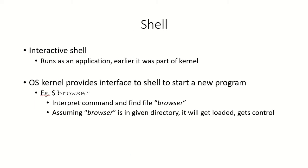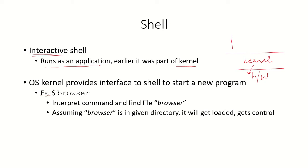Now, an introduction to the shell. The shell provided by the Unix system is interactive and runs as an application. Earlier it was part of the kernel, but now it runs on top of the kernel. The kernel is the core component of the operating system which accesses the hardware, and the OS kernel provides an interface to the shell to start a new program.